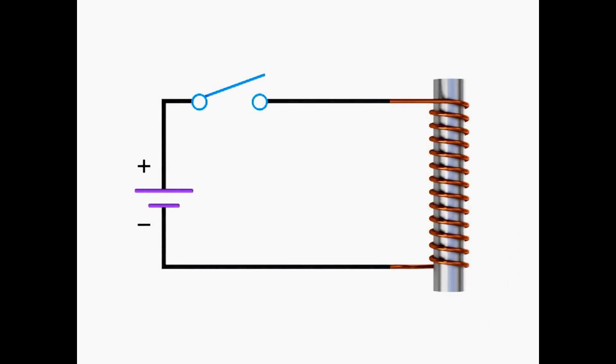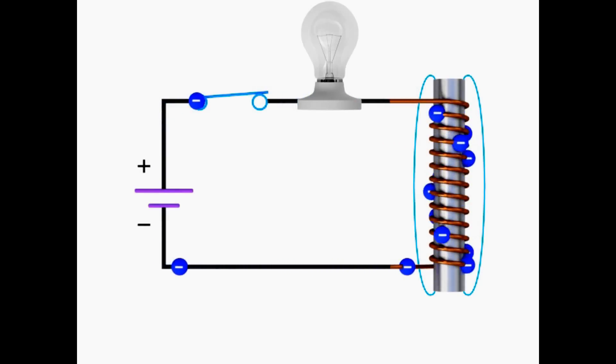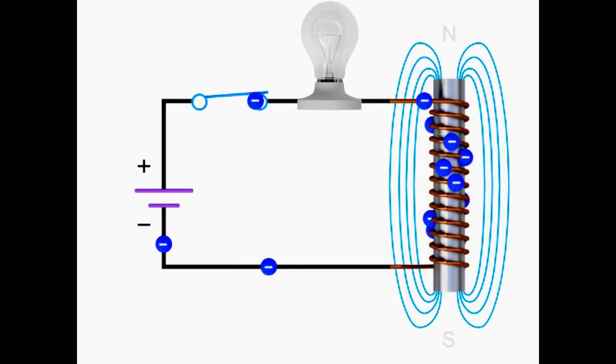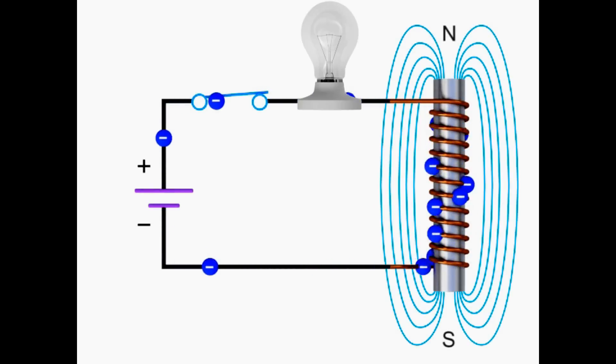To demonstrate the properties of an inductor, we'll add a resistance or light bulb to this circuit. As the switch is closed and the current flows through the circuit, the electromagnetic field in the inductor forms and expands rapidly.